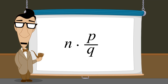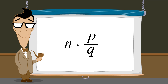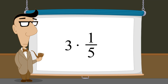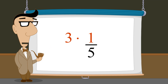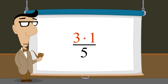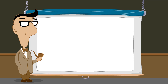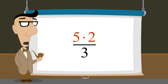So when multiplying an integer and a fraction, we multiply the integer times the fraction's numerator. For example, to multiply three times one-fifth, we multiply three times the numerator one, which gives us three-fifths. Likewise, five times two-thirds is five times the numerator two, or ten-thirds.